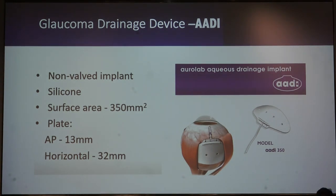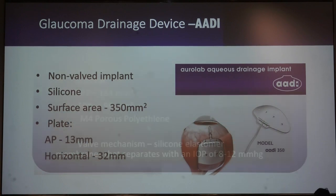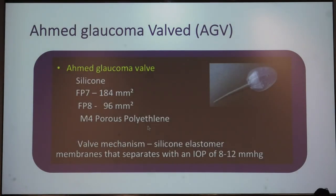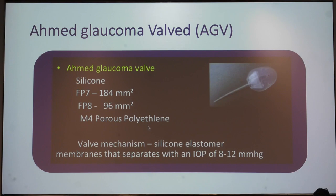Aurolab has developed the RD valve. The Baerveldt prototype has a surface area of 350 mm². The Ahmed Glaucoma Valve most commonly used in the anterior chamber is the FP7 and FP8 models. The new valve has a silicone tube and silicone plate, which gives good outcomes.